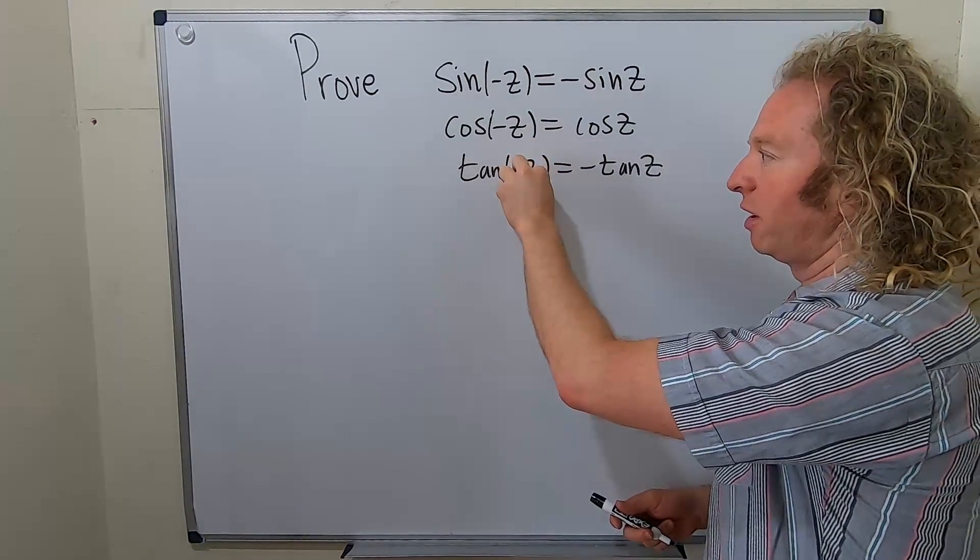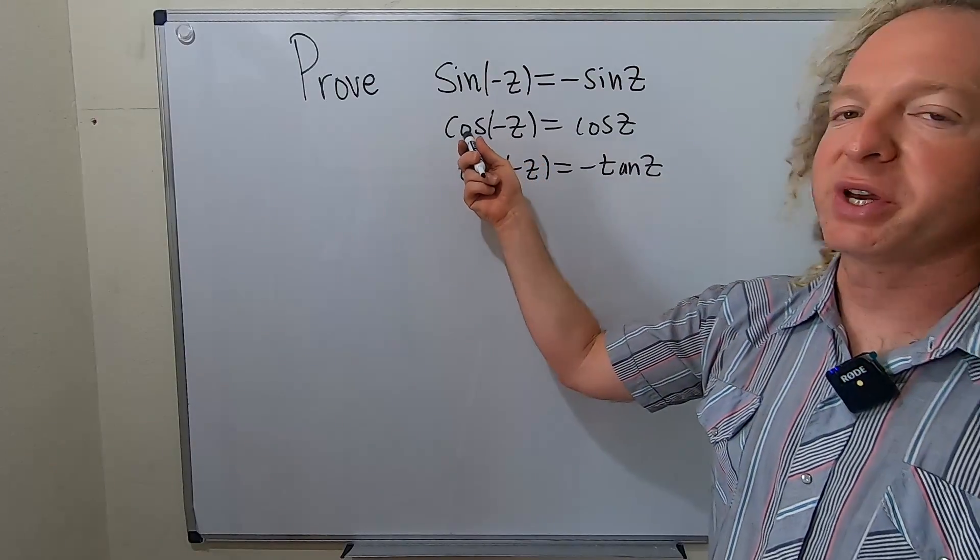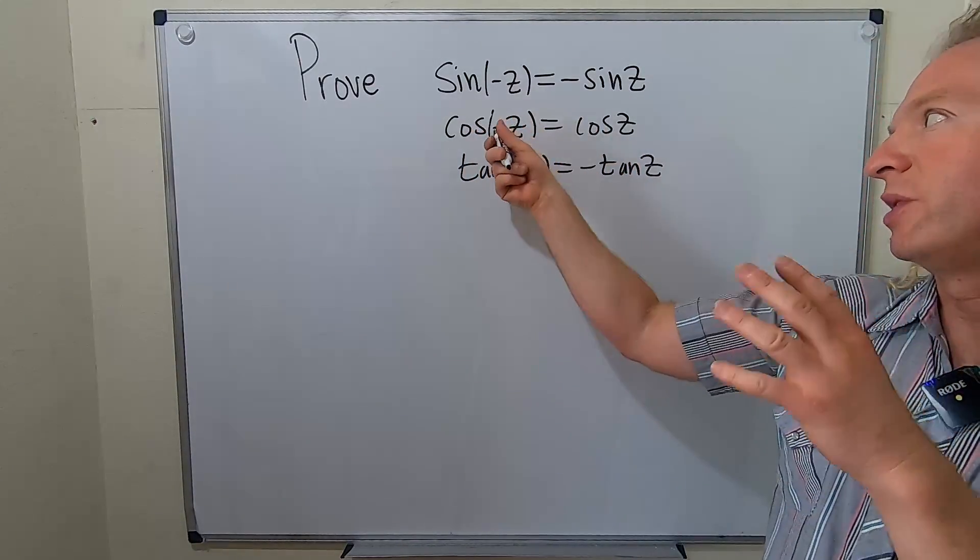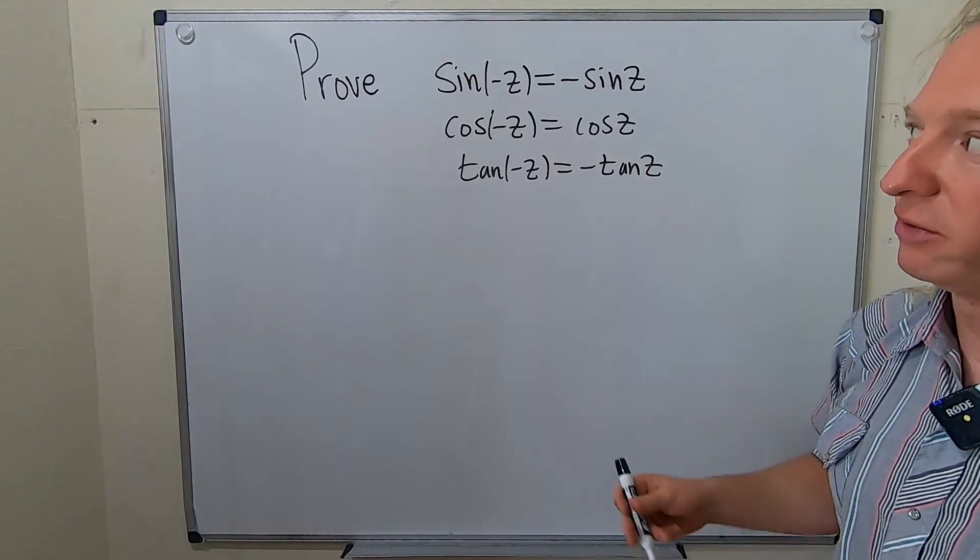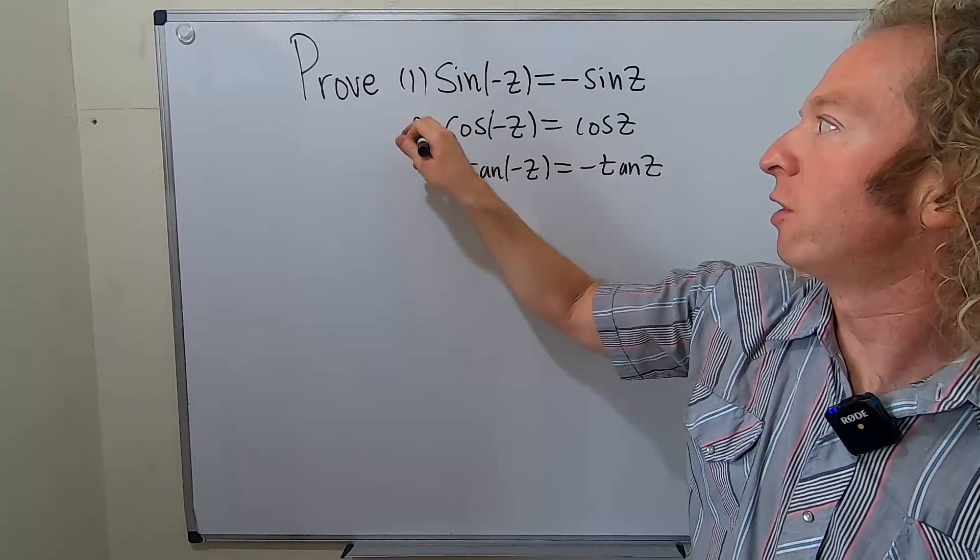This is saying that cosine is even because it gets rid of the negative sign. You plug in a negative z you just get back z. That's what it means for a function to be even. So let's go ahead and prove all of these.